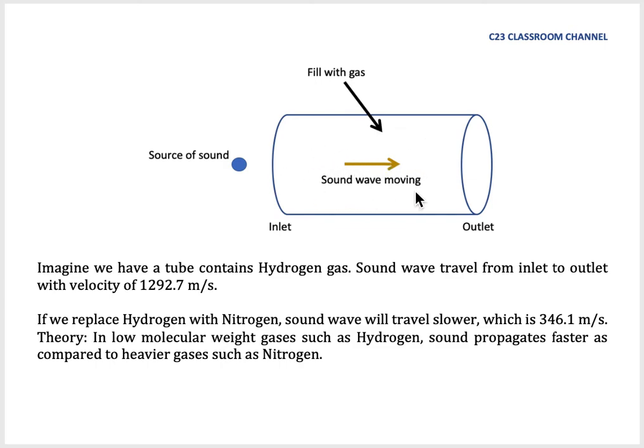In this tube, there is only one type of gas. Let's say this is the inlet and this is the outlet. When the sound from the inlet hits the inlet area here, the sound wave will travel.